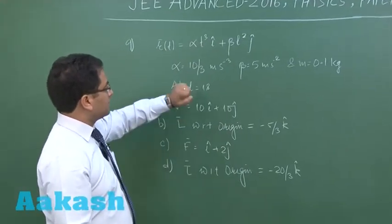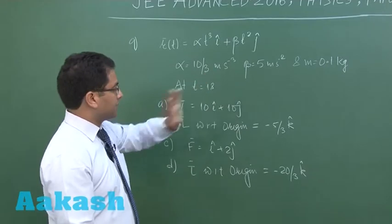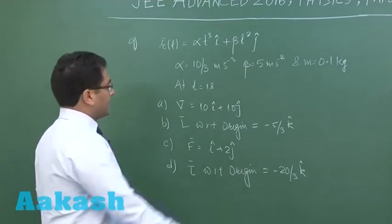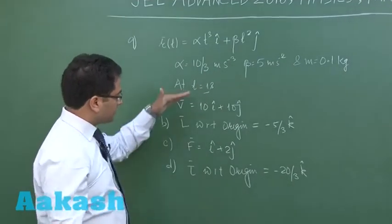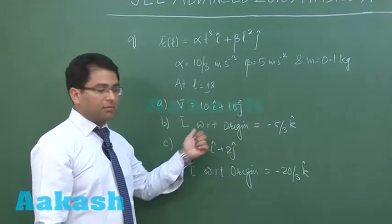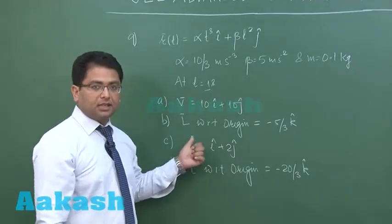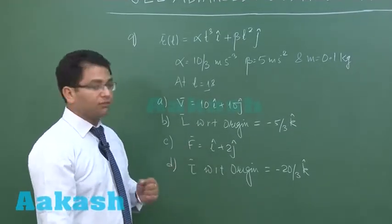Position vector with respect to time is given, the value of alpha, beta and even the mass is given. And at t equals to 1 second we need to calculate the velocity, angular momentum with respect to origin, the force and the torque with respect to origin.